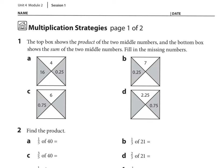Number 1 says the top box shows the product of the two middle numbers, and the bottom box shows the sum of the two middle numbers. Fill in the missing numbers. So for A, we see that 16 times 1 fourth is 4. Therefore, what is the bottom number? 16 plus 1 fourth. So I know 16 plus 1 fourth is 16 and 1 fourth, which is the same as 16 and 25 hundredths.